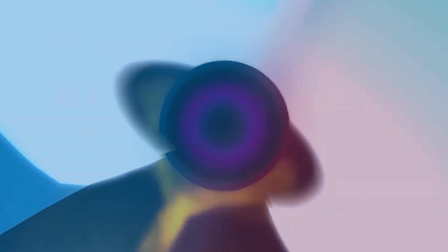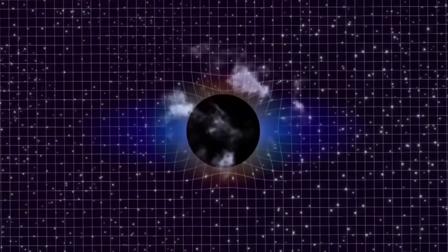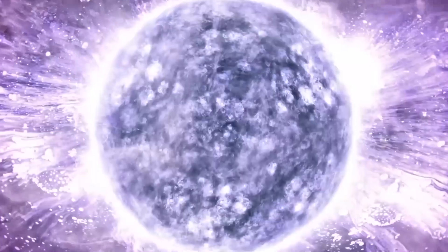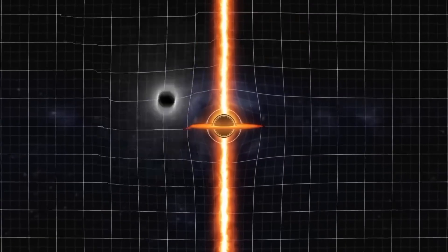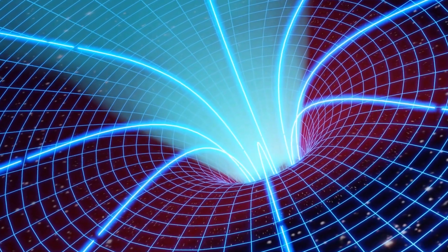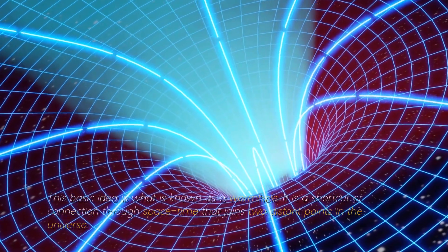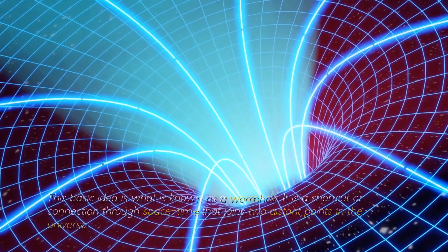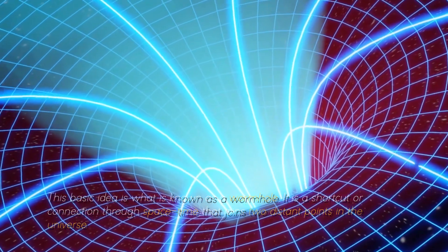Objects with mass warp space-time, creating a gravitational field that affects the motion of other objects. To visualize this, we can imagine a sheet of paper representing space-time. If we place two points onto the paper and draw a line between them, we are representing how objects move through space-time. Now, let's consider folding the paper in half and creating a shortcut between those two points. This basic idea is what is known as a wormhole. It is a shortcut or connection through space-time that joins two distant points in the universe.